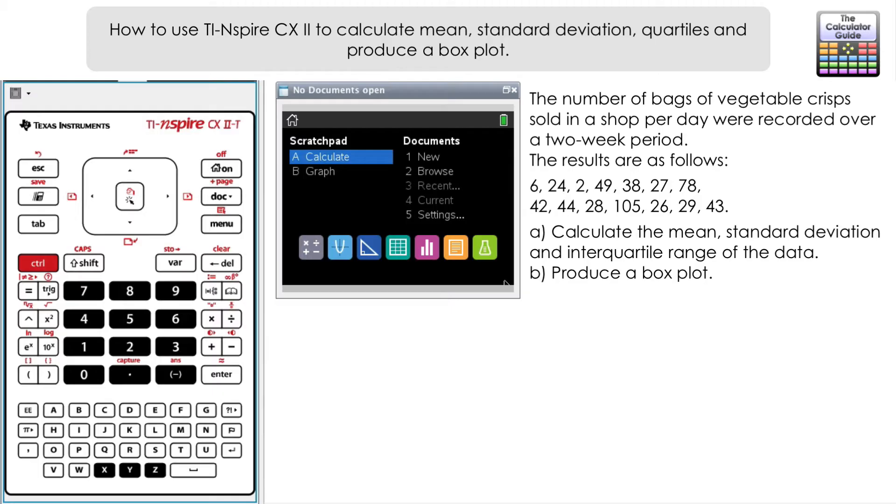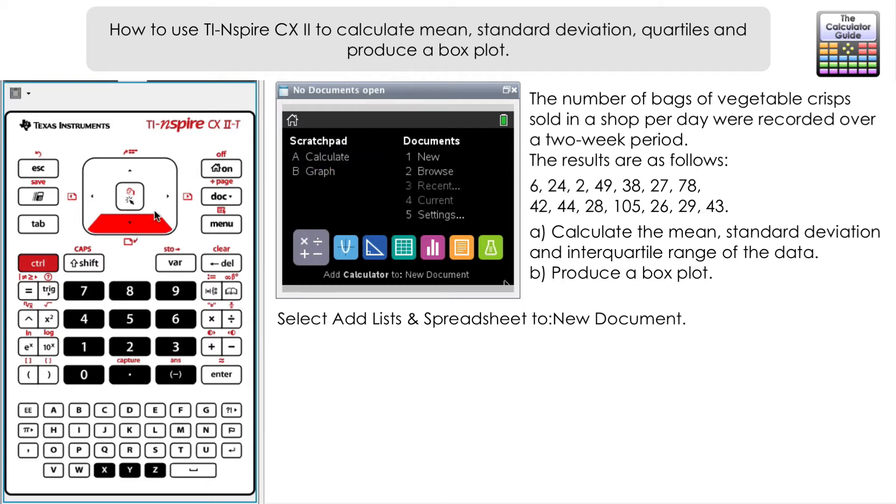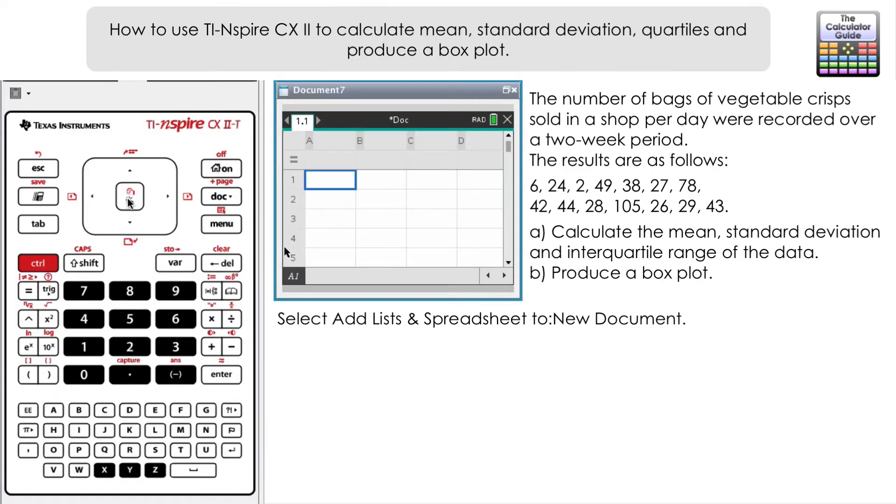The first thing we need to do is to input our data. We need to navigate to Add Lists & Spreadsheet. We're going to enter the data as a list so that we can then find out the summary statistics for that list.